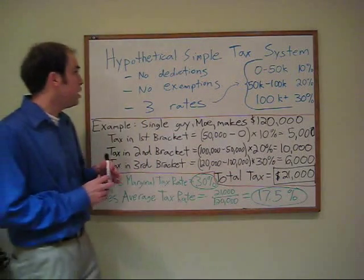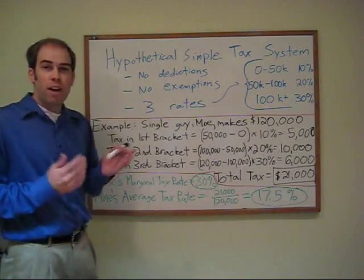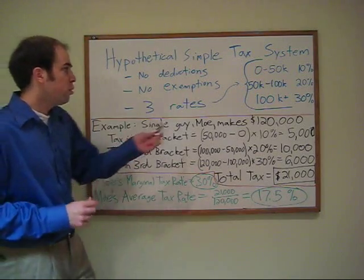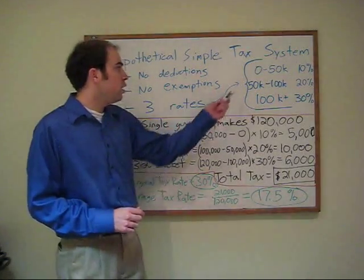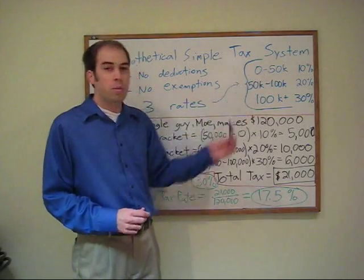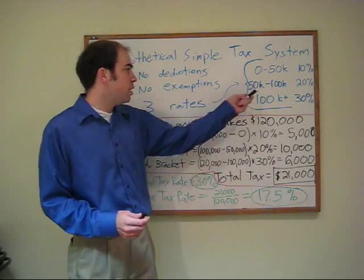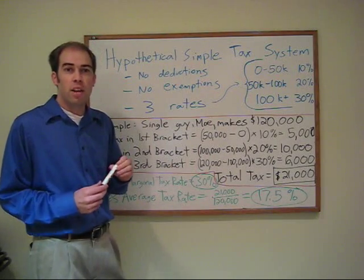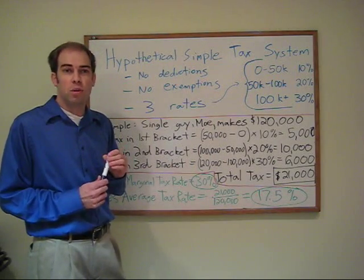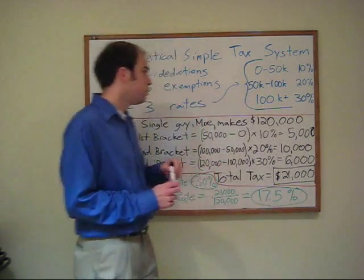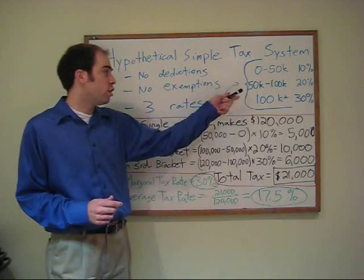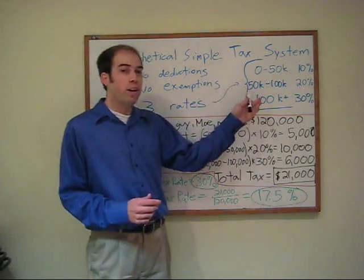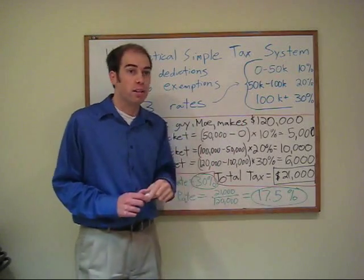So we're just going to go through a simple example here of a hypothetical tax system with no deductions, no exemptions, and three rates. The three rates would be: all income from $0 to $50,000 taxed at 10%; $50,000 to $100,000 taxed at 20%; and beyond $100,000 taxed at a 30% rate. This is called a marginal rate structure — a progressive rate structure, meaning higher-income people are taxed at a higher rate.